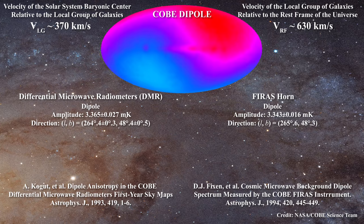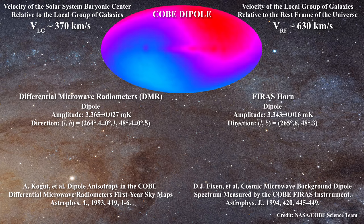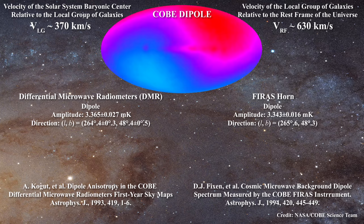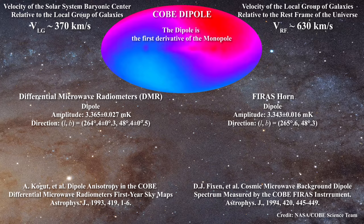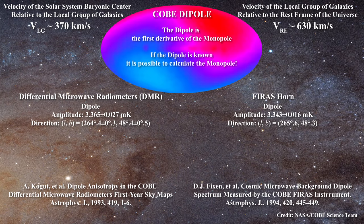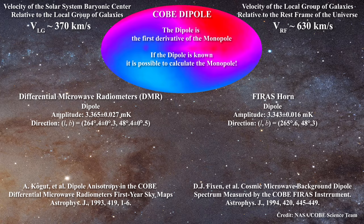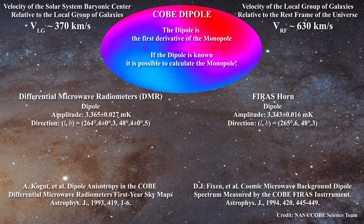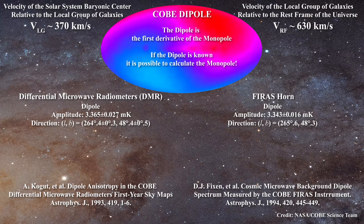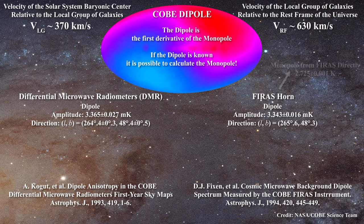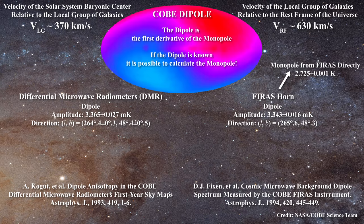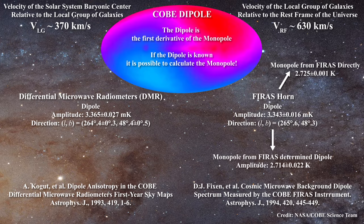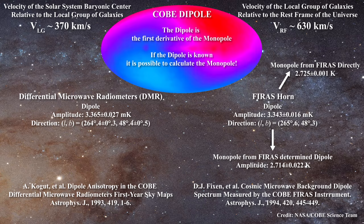There is no significant dipole terms other than that currently associated with motion relative to the rest frame. The interesting thing about the dipole is that it is actually given by the first derivative of the monopole. If the dipole is known, it is possible to calculate the monopole. In fact, this is exactly what happened with the COBE satellite. In addition to measuring the monopole directly with the FIRAS horn, the COBE team calculated the value using the dipole. They obtained a value of 2.725 ± 0.001 Kelvin using FIRAS directly, and then calculated a value of 2.714 ± 0.022 Kelvin using the dipole.